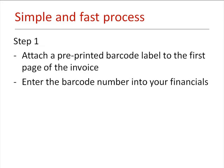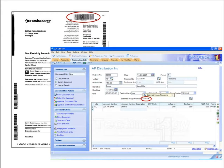There are three very simple steps in the ScanWatcher process. Step one: attach a pre-printed barcode label to the first page of the invoice — any location, it doesn't matter. You then enter the barcode number into your financials, usually using a handheld infrared gun or just type it in. Here is an example of the barcode number field in Technology One Financials.